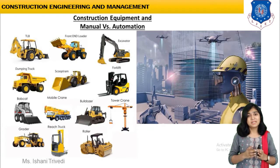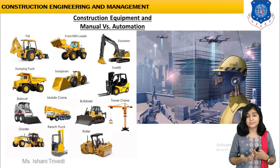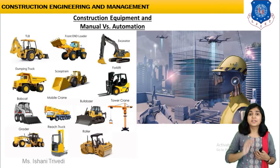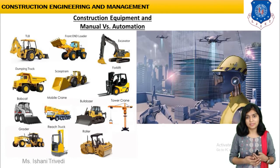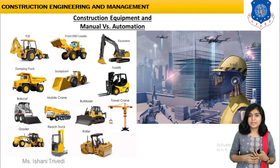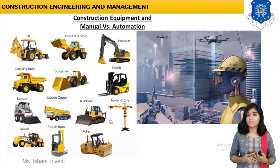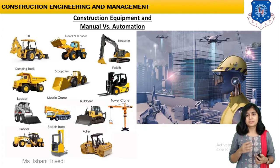The basic difference is: in traditional equipment, manpower is required compulsorily to operate and carry out the function, while in automation it will be completely robotics. For example, 3D printing technology is currently being utilized everywhere — not just in civil engineering but in dentistry as well, where 3D printed models are being prepared, and the same is the case with concrete structures.